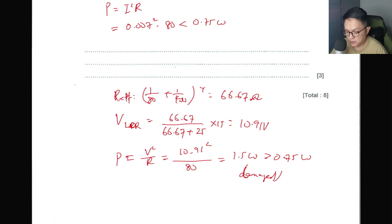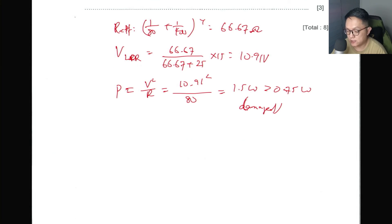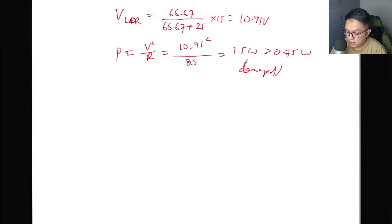If you write a statement: the power dissipation is higher than the maximum rated power, hence the LDR will be damaged. The 0.75 W rating means the LDR can safely transform 0.75 J of electrical energy per second. Since we have 1.5 W, the excess 0.75 W will cause the LDR to heat up beyond safe limits and damage it. That's question 4. Let's move on to question 5.